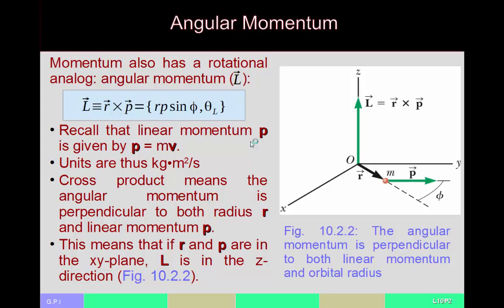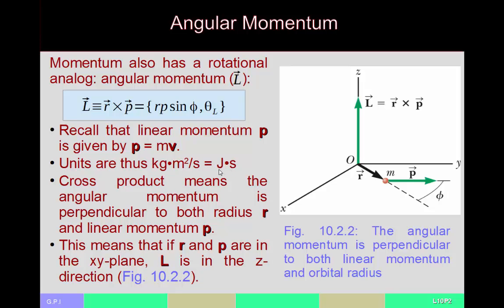Unit-wise, linear momentum is given by p = mv, so if you multiply m times v times r you get kilograms times meters per second times meters, which is kilogram meters squared per second. This can also be given by the unit joule seconds, since a joule is a kilogram meter squared per second squared — we're missing a squared on the per second — hence it is joule times seconds.